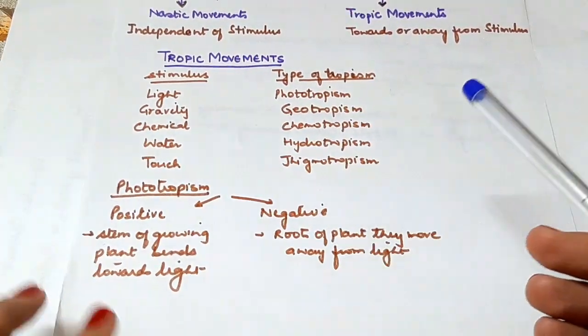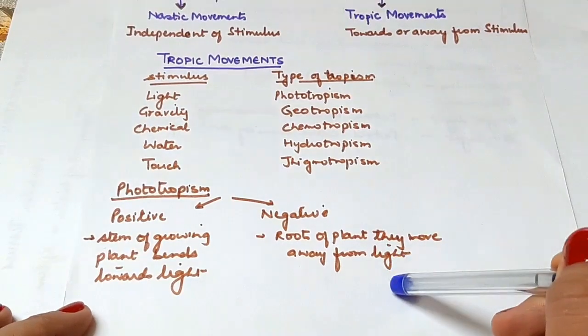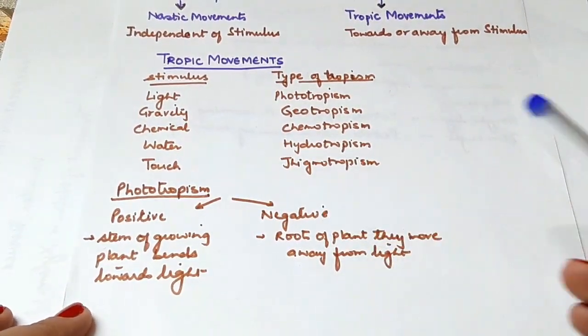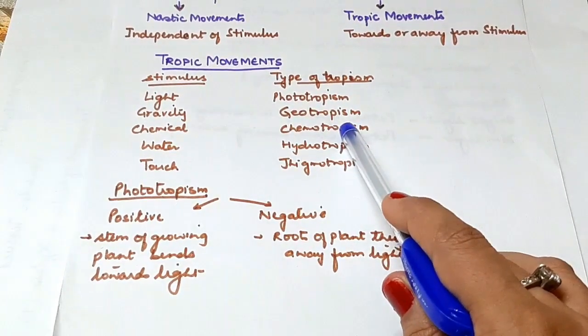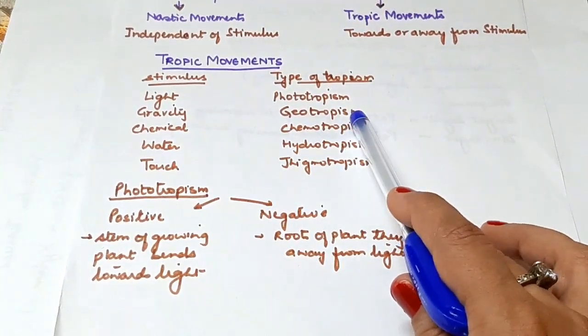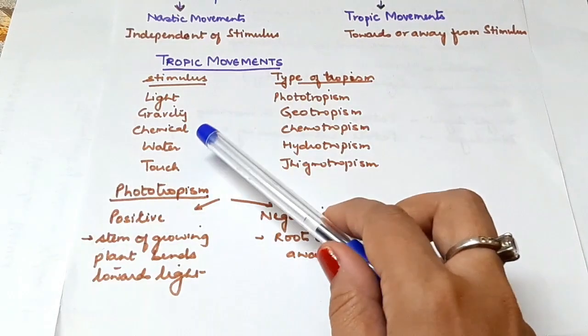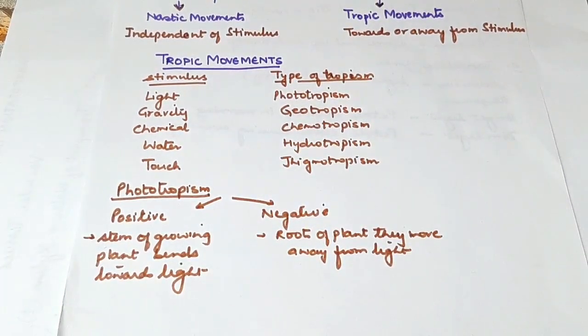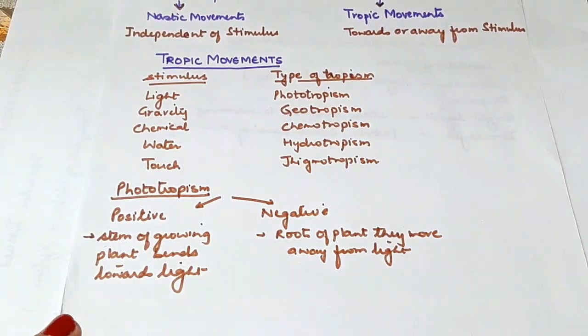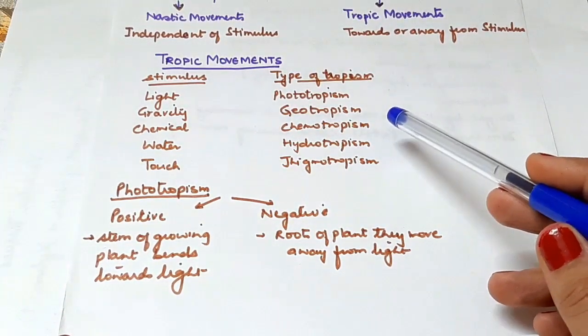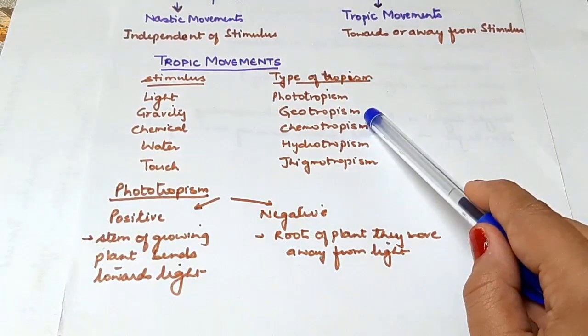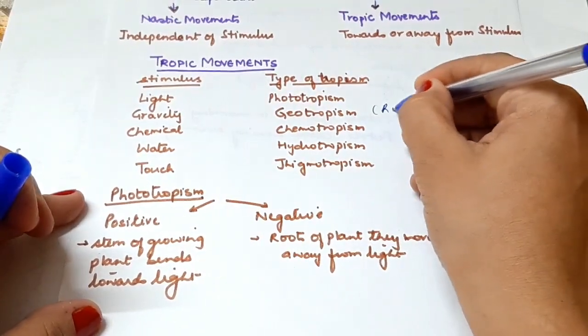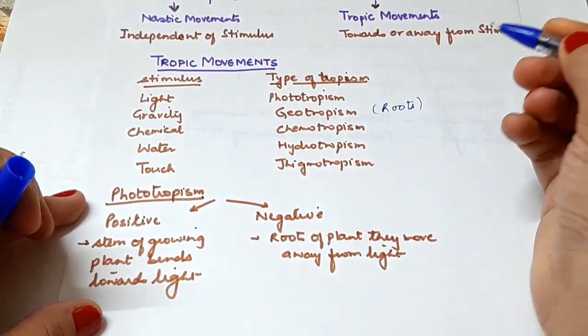Negative phototropism is when roots move away from light. Moving on to geotropism - this is the movement of plant parts in response to gravity. Roots move downwards in the direction of gravity, so they are positive geotrophic.